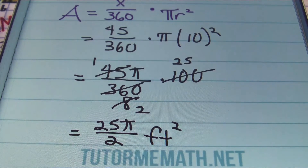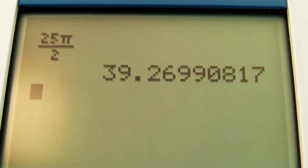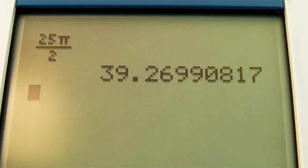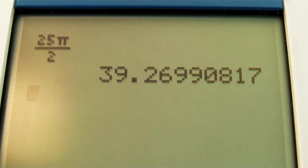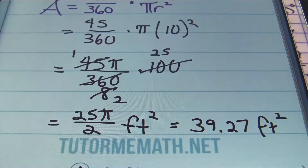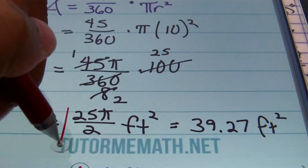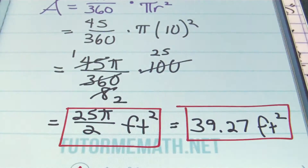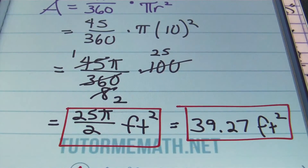That's your exact answer. If you need decimal notation, plug 25π over 2 into your calculator and hit enter. You end up with 39.270, rounded to the nearest thousandths place, in square feet. Let's box up both answers — exact and decimal. That's problem number two.